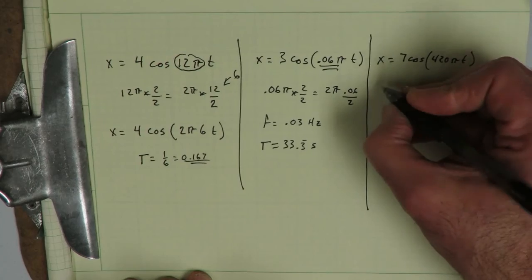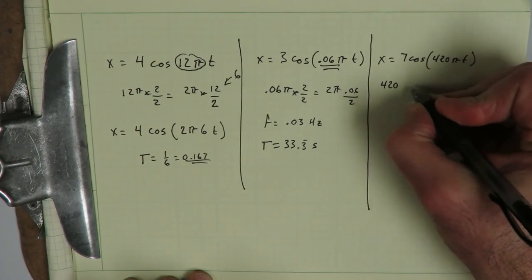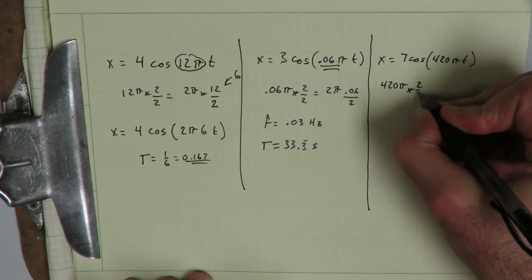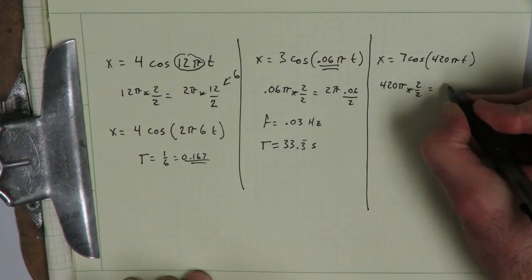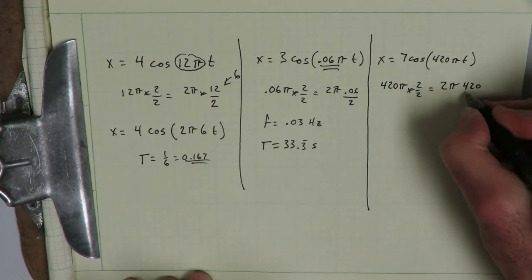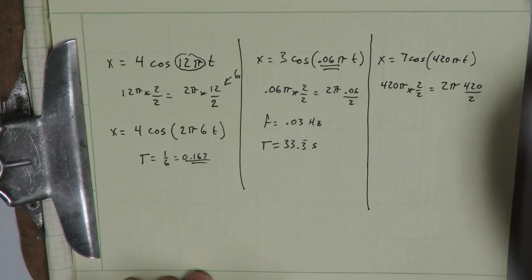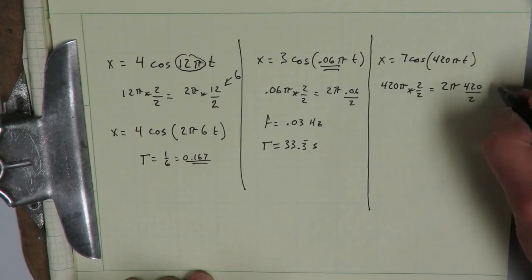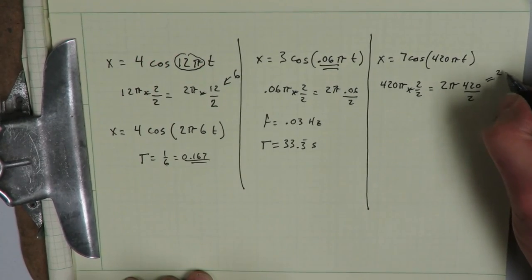Okay, welcome back. What we're going to do is take 420 pi, multiply that by 2 over 2, and that comes out to be 2 pi times 420 over 2. This part is equal to 210.